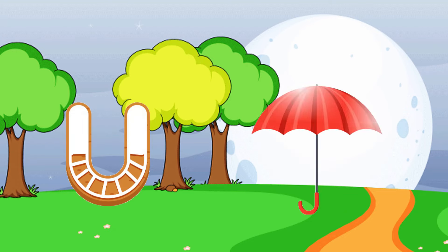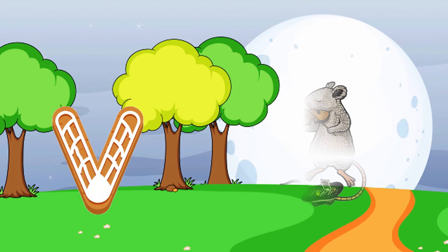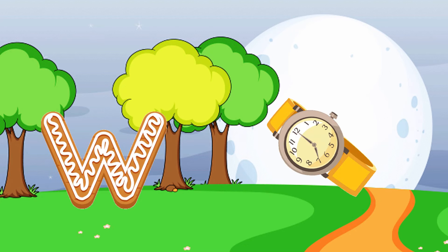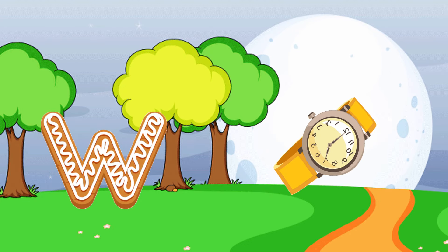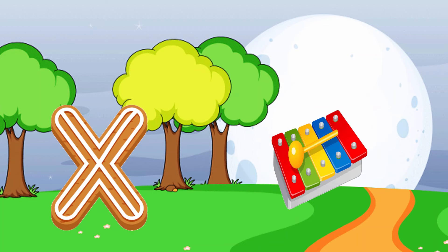U is for umbrella, u-u-umbrella. V is for violin, v-v-violin. W is for watch, w-w-watch. X is for xylophone, x-x-xylophone.